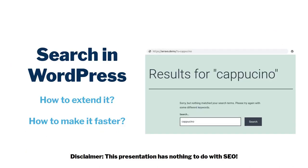This presentation is specifically about the most common things our customers ask advice on: how to extend the WordPress search, how to get all the meta tags and custom post types and other content included, and how to make it faster. This talk is not about search engine optimization or how Google indexes your site, but specifically how the search in WordPress itself works.